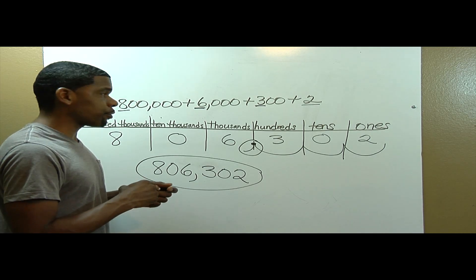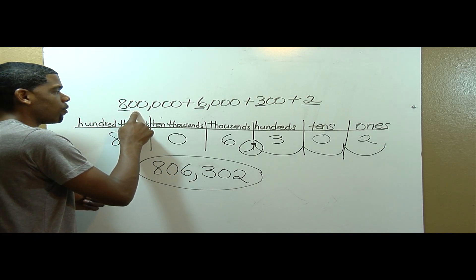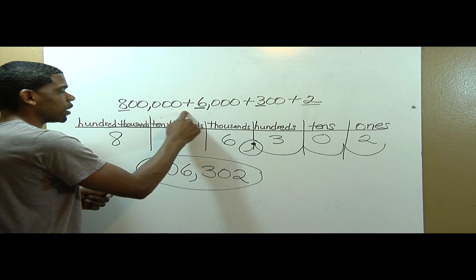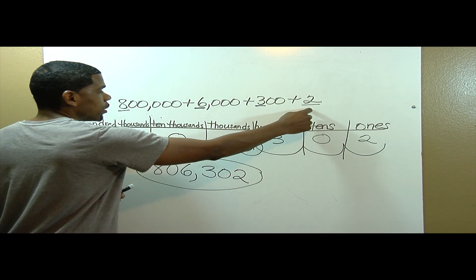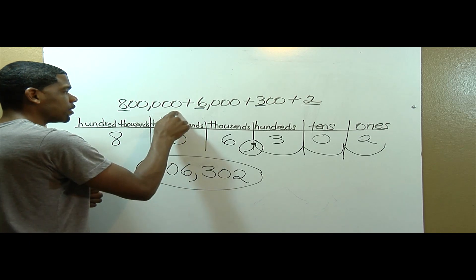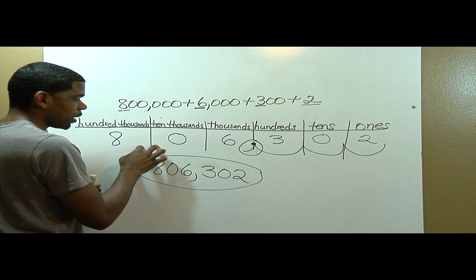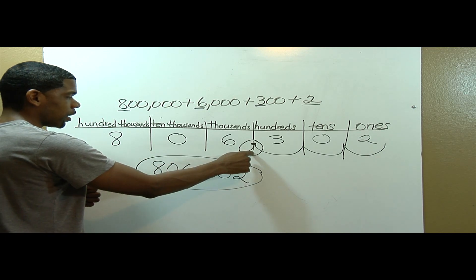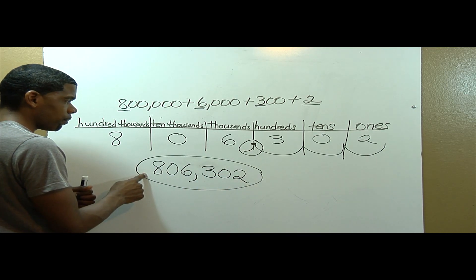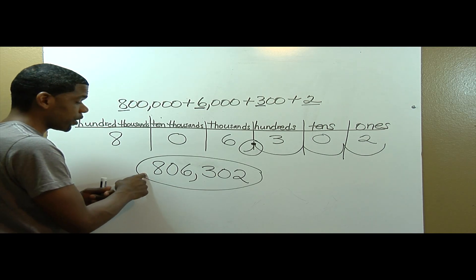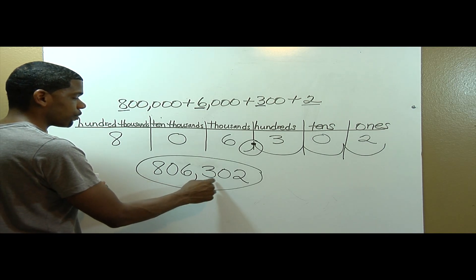Just debriefing: here is my number in expanded form — eight hundred thousand plus six thousand plus three hundred plus two. I placed this expanded form number in the place value chart, found where to place my comma, and rewrote my number in standard form. My standard form number is eight hundred six thousand, three hundred two.